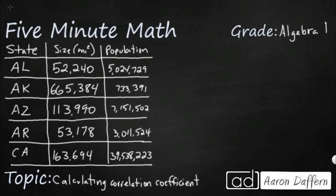Does having the largest size always mean you have the largest population, or are those two variables not related at all? To do this, we are going to calculate the correlation coefficient.